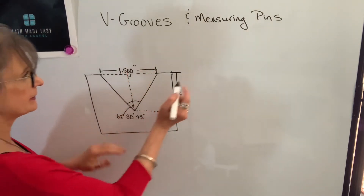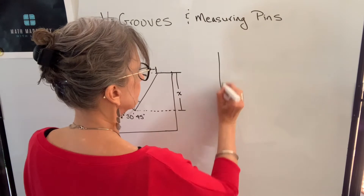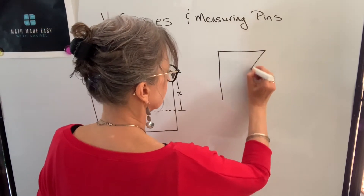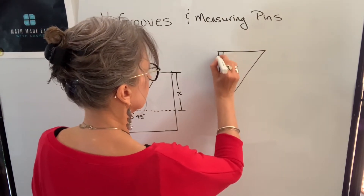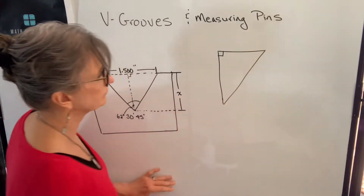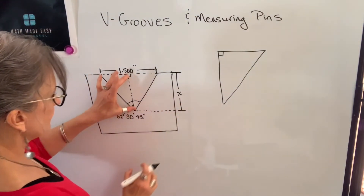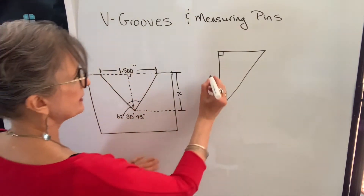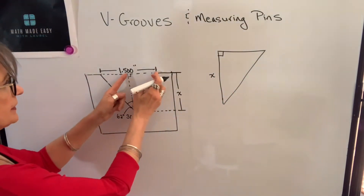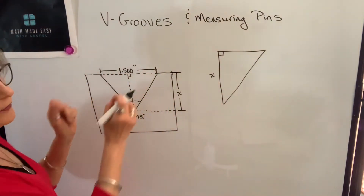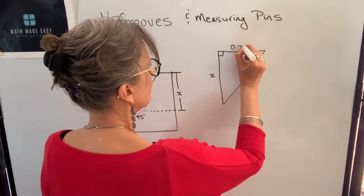Let's take this one on the right, and I'm going to redraw that. This vertical distance is called x, and this horizontal distance will be half of 1.500, so it's going to be 0.750.